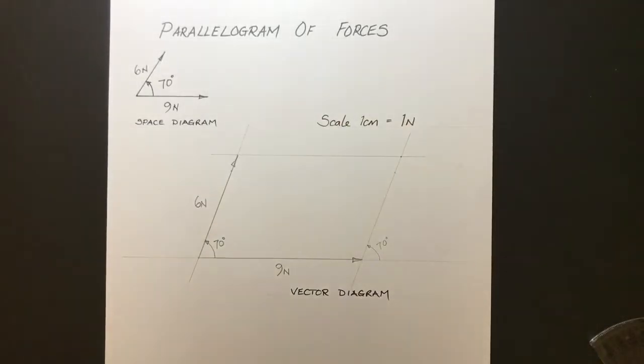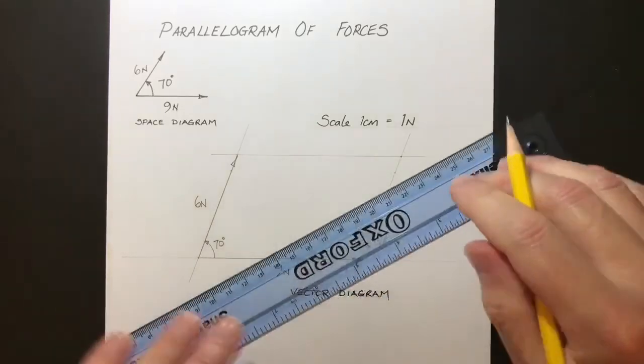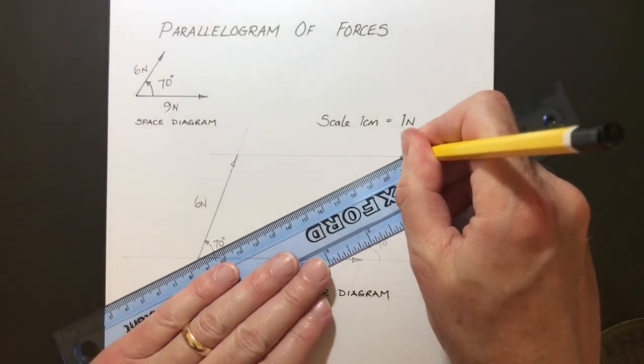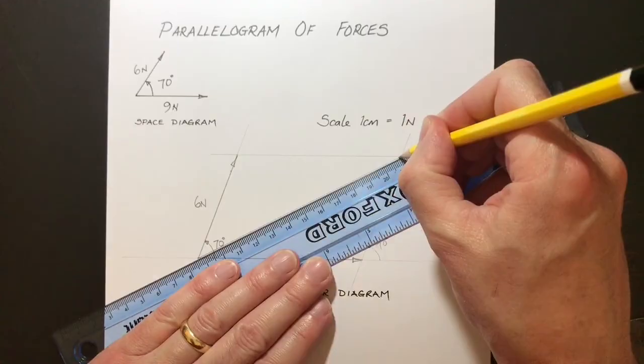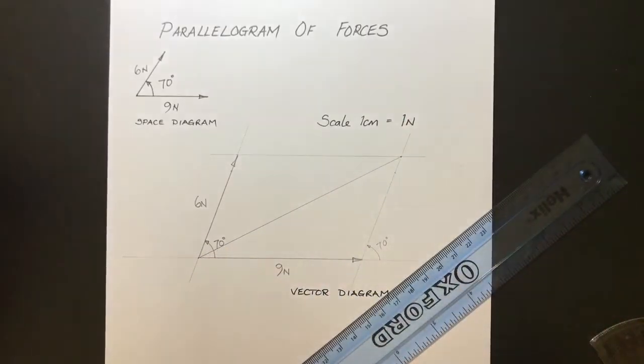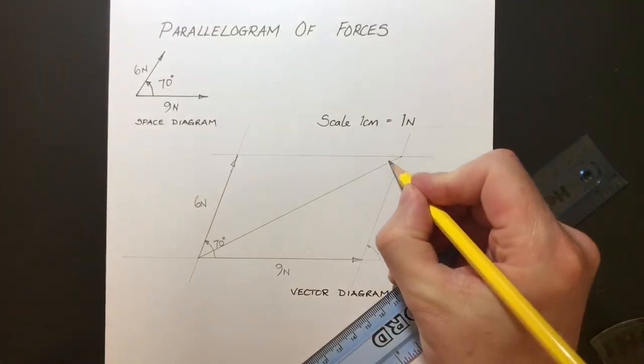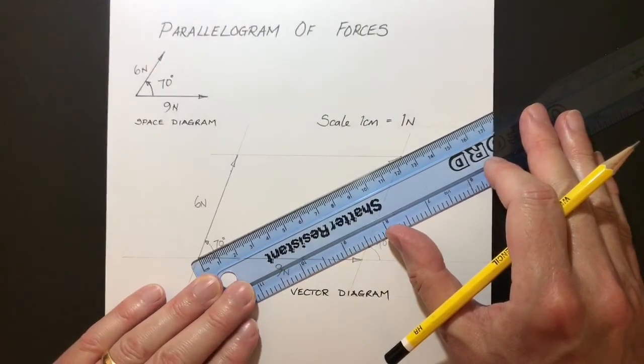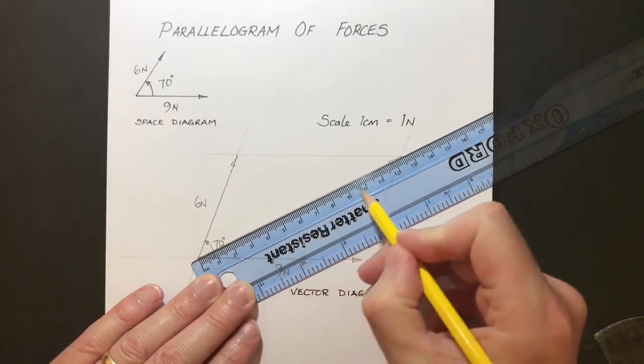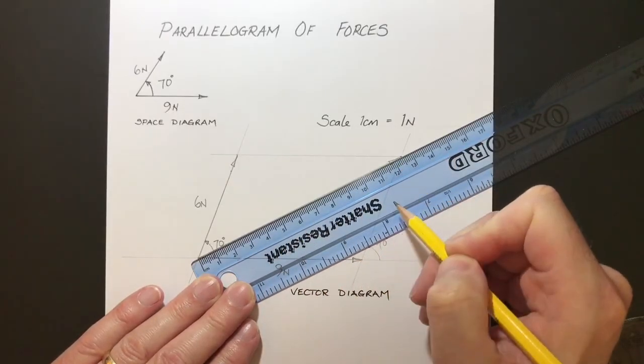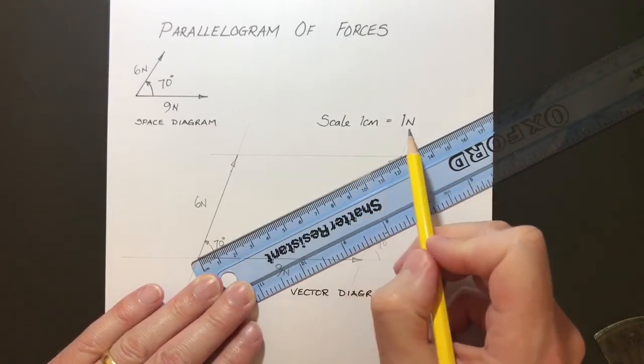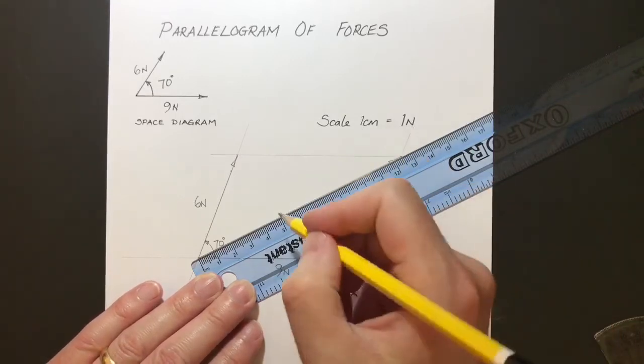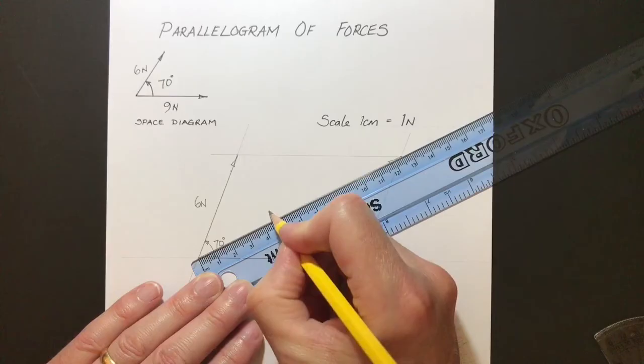So where's the resultant? Well, the resultant moves from the origin here up to where those lines cross. Let's just draw that in. There we go. And what's the magnitude of this resultant? Well, to find that out, we need to measure it. And it comes out as 12.4. So there's 12.4 centimeters. And knowing that one centimeter is one Newton, we then know that that is 12.4 Newtons.